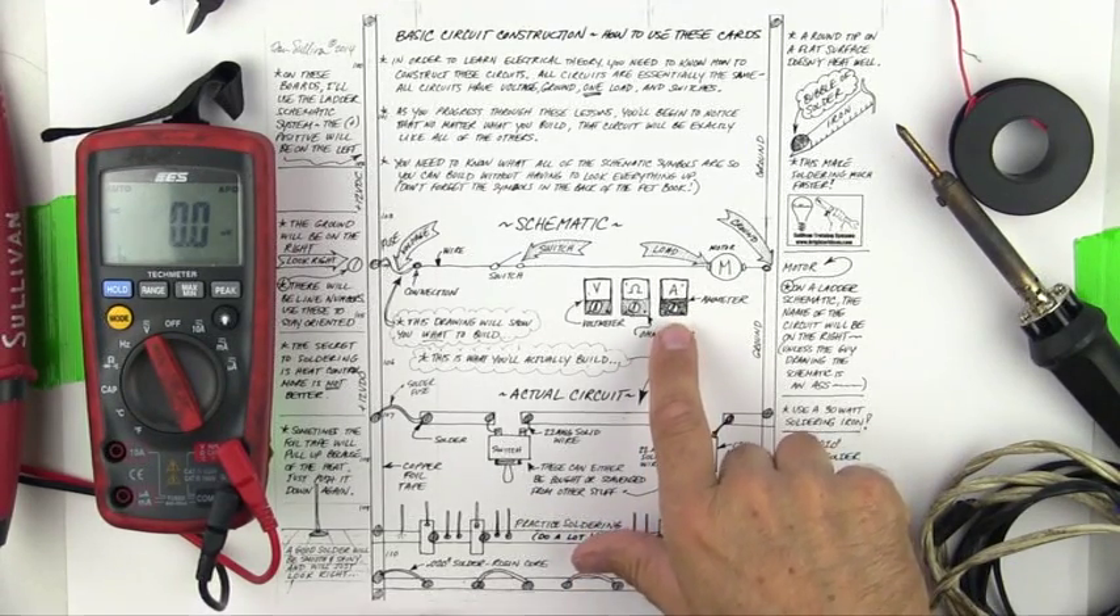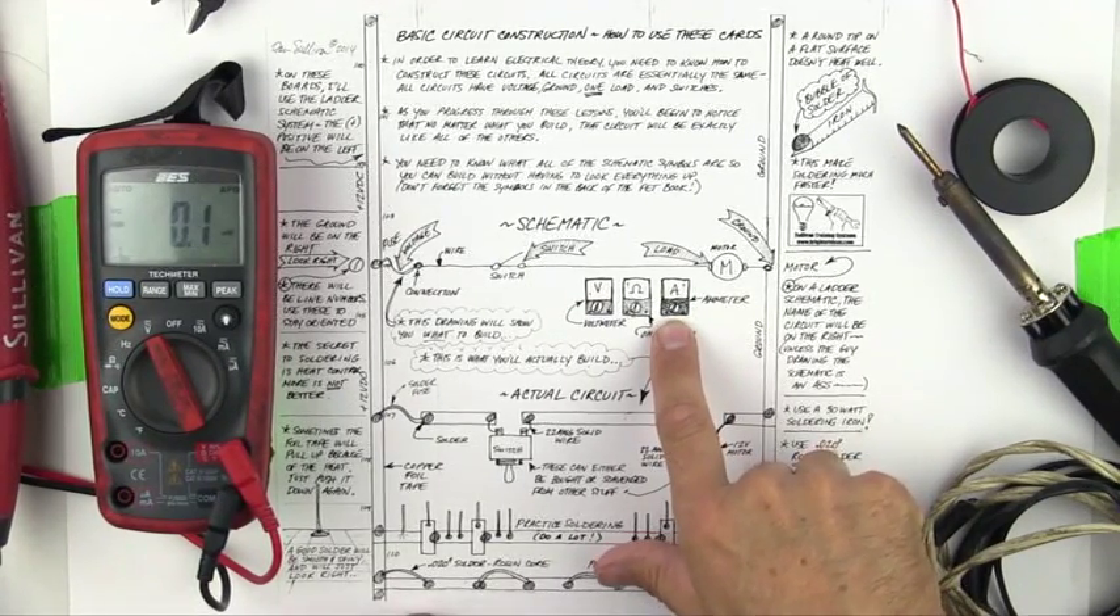If you're reading voltage or resistance on an auto ranging meter, then it's just going to give you the best answer there is to have. On the cards I've put meters everywhere you can and should read voltage, resistance, or amperage. The way that I've set it up is you're going to be using the amp meter a lot as a switch.